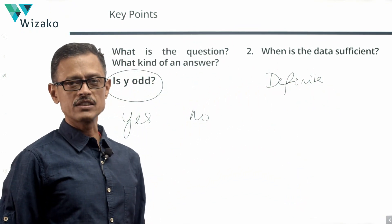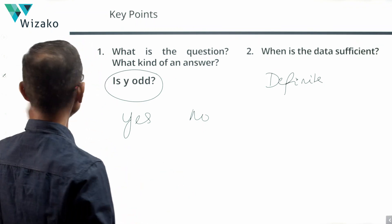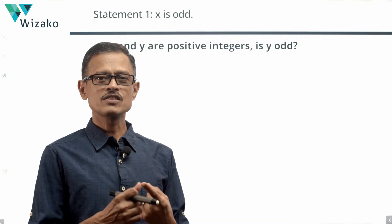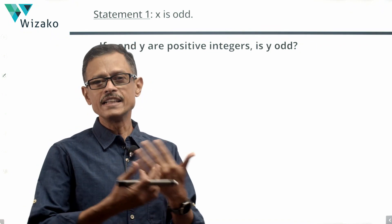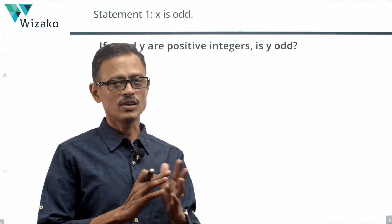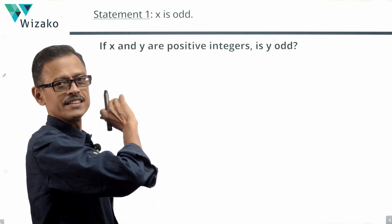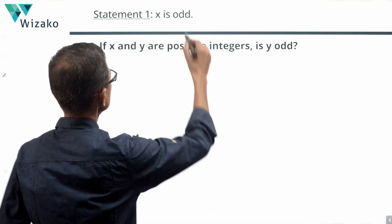You know the ground rules about solving this question. Take a look at statement one and one alone. Statement one alone states that x is odd. The question is about y. We do not know anything about y. Knowing something about x is not sufficient. The statement, very quickly in less than five seconds, we can say is irrelevant to answering this question. Statement one is not sufficient.